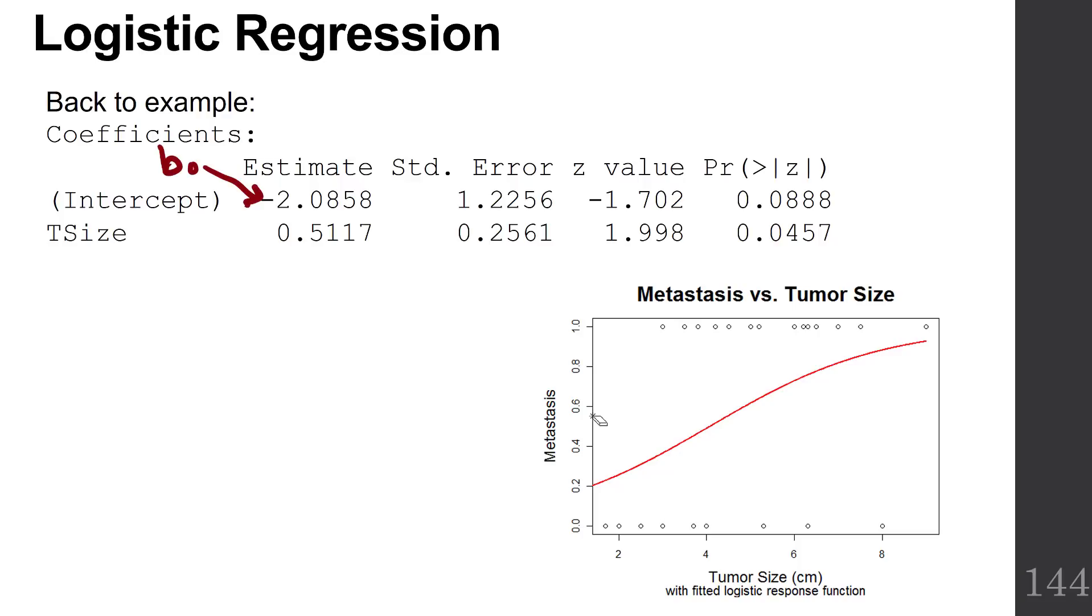And we have our beta naught, an estimate of beta naught, which is B naught. That's the intercept. We're used to seeing this kind of output, so this should look very familiar. And we've got our B1.